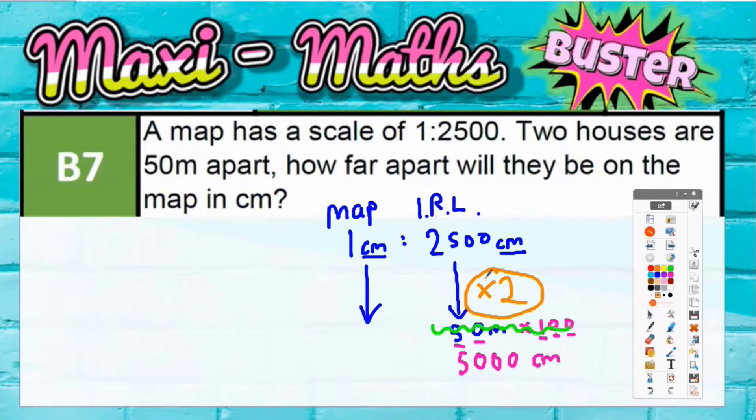So once you know you're times-ing by two on the right hand arrow, that means you're times-ing by two on the left hand arrow. So one centimeter times two would be two centimeters, and that actually is our answer. If one centimeter on the map is 2,500 centimeters, two centimeters on the map must be 5,000 centimeters.